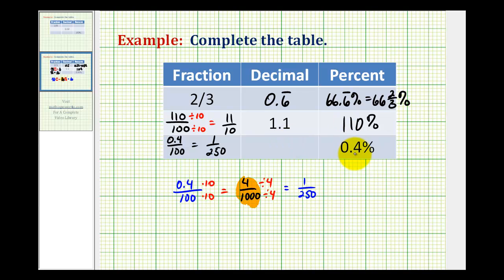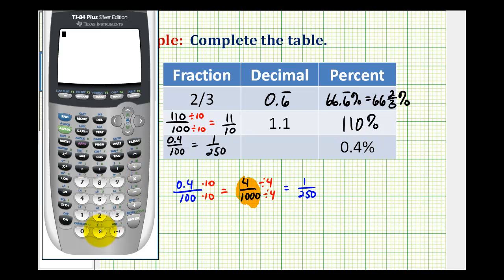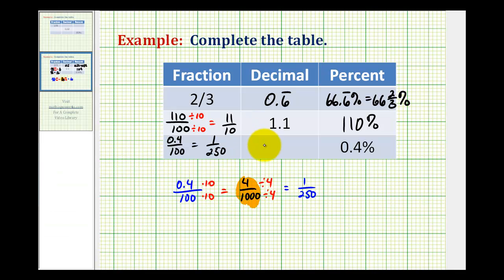Or to convert the percent to a decimal we drop the percent symbol and divide by 100. So point four divided by 100 is going to give us point zero zero four which is four thousandths. When we write this we'll have a zero in the ones place value followed by point zero zero four.